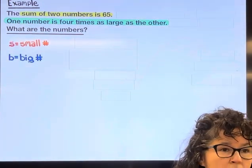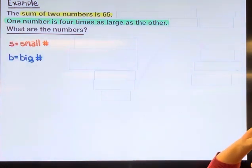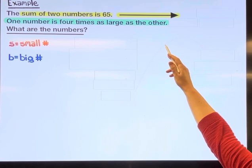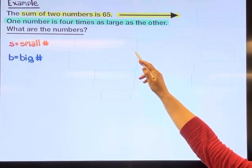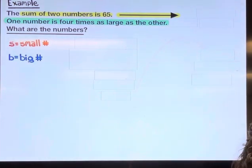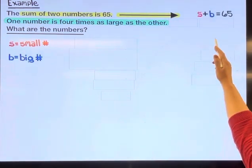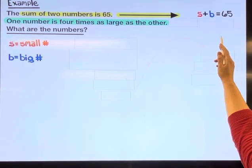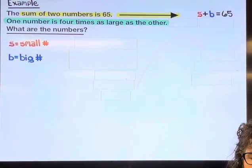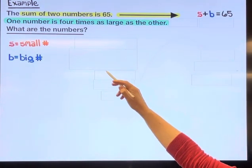This first sentence is going to lead me to my first equation. The sum of the two numbers is 65. The word sum means add, so I'm going to have s plus b, the small number plus the big number, equals 65.